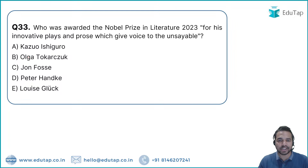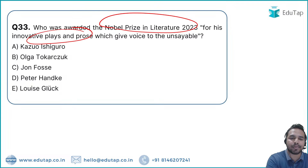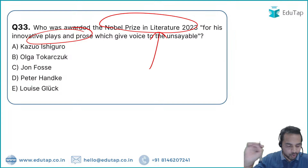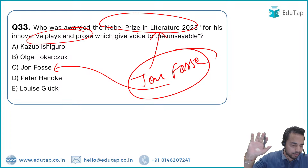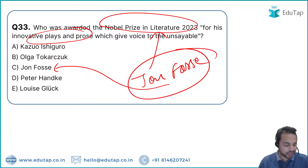Question 35: The Nobel Prize in Literature 2023 was awarded for innovative plays and prose. The winner is Jon Fosse — Option C. A mnemonic to remember: think of the English poem 'John A' from childhood. Jon Fosse is the correct answer.